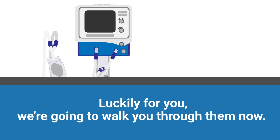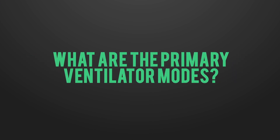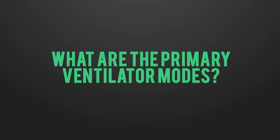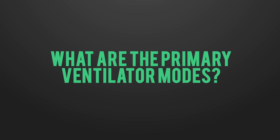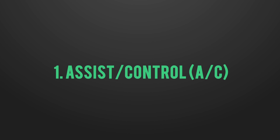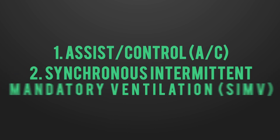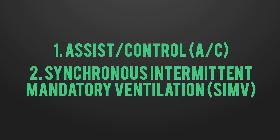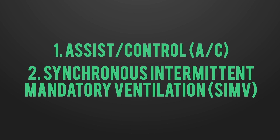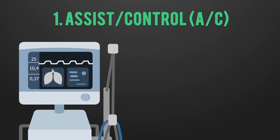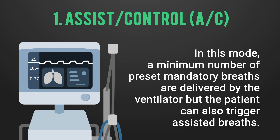The two primary ventilator modes — the operational modes of the machine — are Assist Control (AC) and SIMV, which stands for Synchronous Intermittent Mandatory Ventilation. In Assist Control mode, a minimum number of preset mandatory breaths are delivered by the ventilator, but the patient can also trigger assisted breaths.